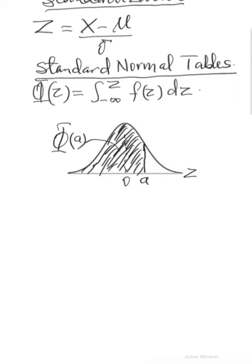So Φ(z) always includes the area to the left of that z value and not the one to the right. For you to use the standard normal table, you need the probability in the form of Φ of a particular value. Φ(a) means P(Z < a), which is the area to the left of a — and that is what you look up in the table. Before going to the standard normal tables, make sure you have your probability as P(Z < a) rather than P(Z > a), since the table only gives Φ of a specific value.